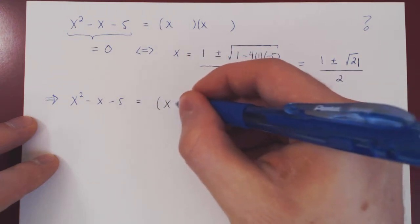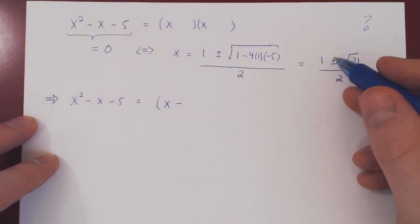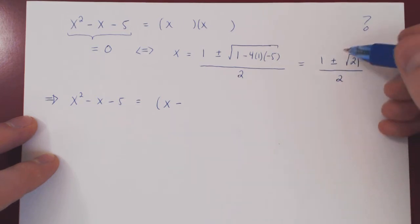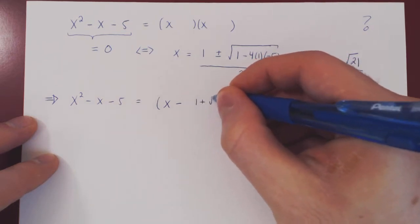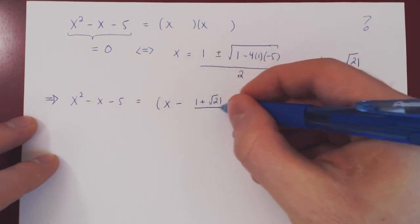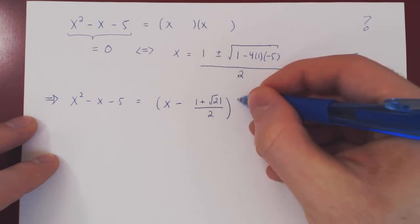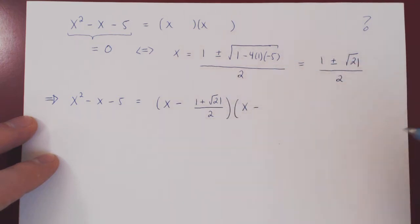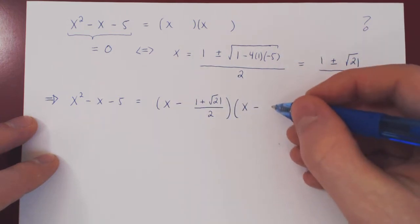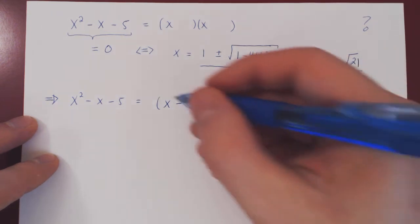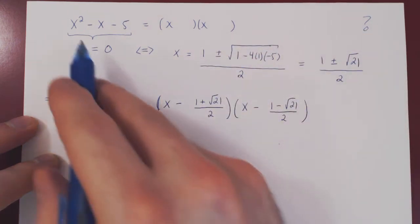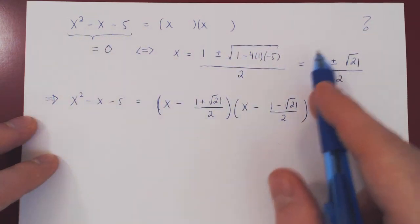x squared minus x minus 5 will factor as x minus the first zero. You could take either the positive or the negative, it doesn't matter. Let's take the positive to be our first zero. So, 1 plus root of 21 over 2 times x minus the second zero, now of course the negative, 1 minus root of 21 over 2. And that's it. We have just factored this polynomial using the quadratic formula.